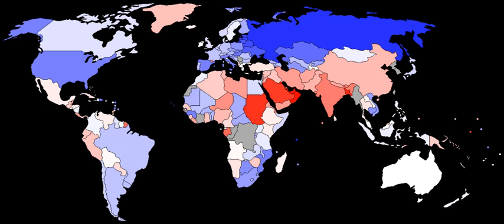In anthropology and demography, the human sex ratio is the ratio of males to females in a population. More data is available for humans than for any other species, and the human sex ratio is more studied than that of any other species, but interpreting these statistics can be difficult. Like most sexual species, the sex ratio in humans is approximately 1 to 1.